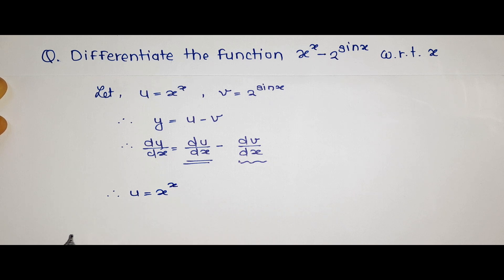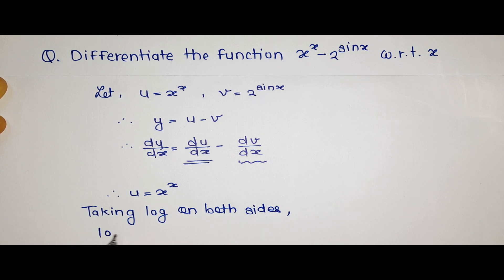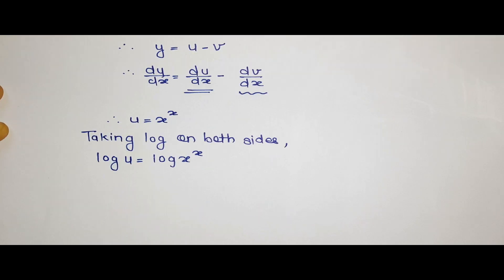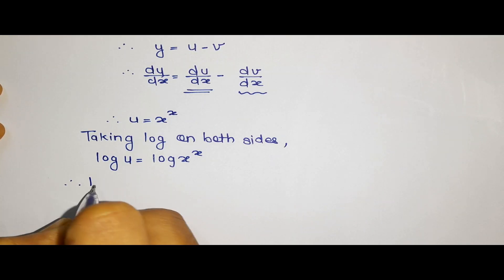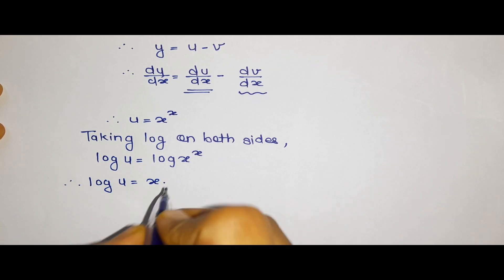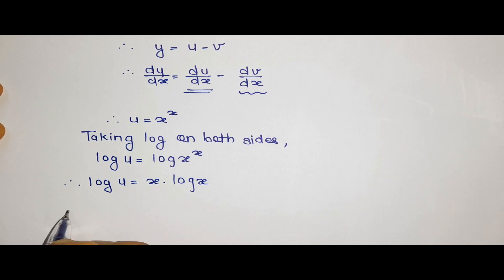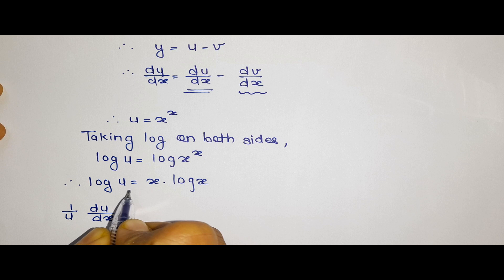To find du by dx, we start with u is equal to x raised to x. By taking log on both sides, we get log u is equal to log of x raised to x. By the power rule of logarithmic functions, this becomes log u is equal to x into log x.